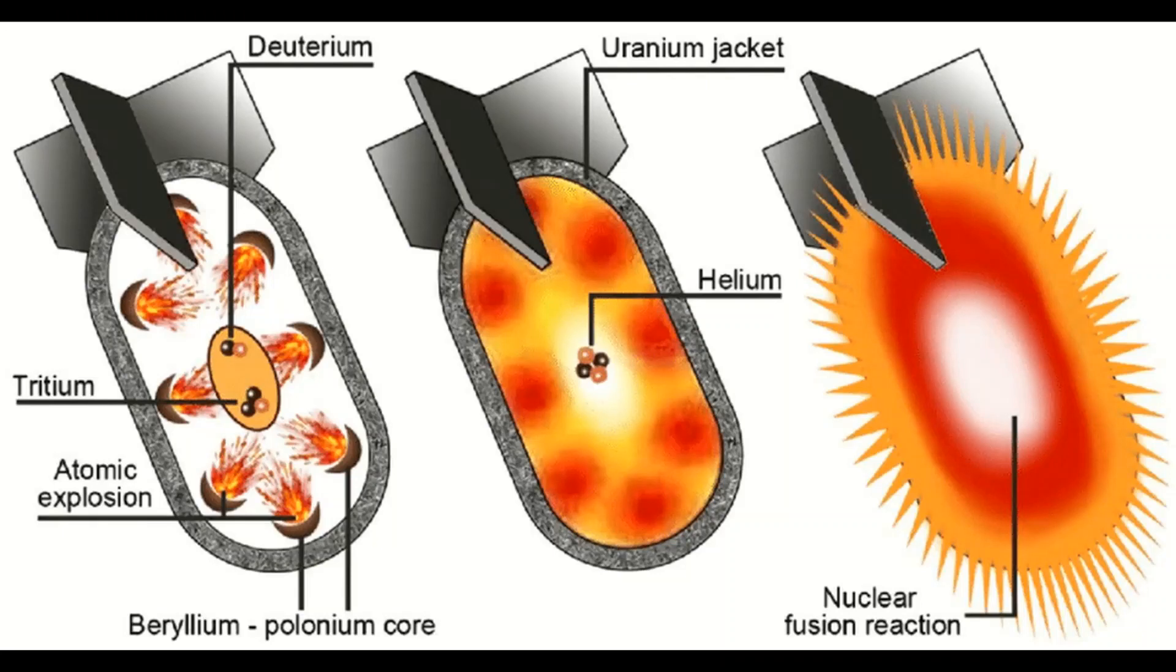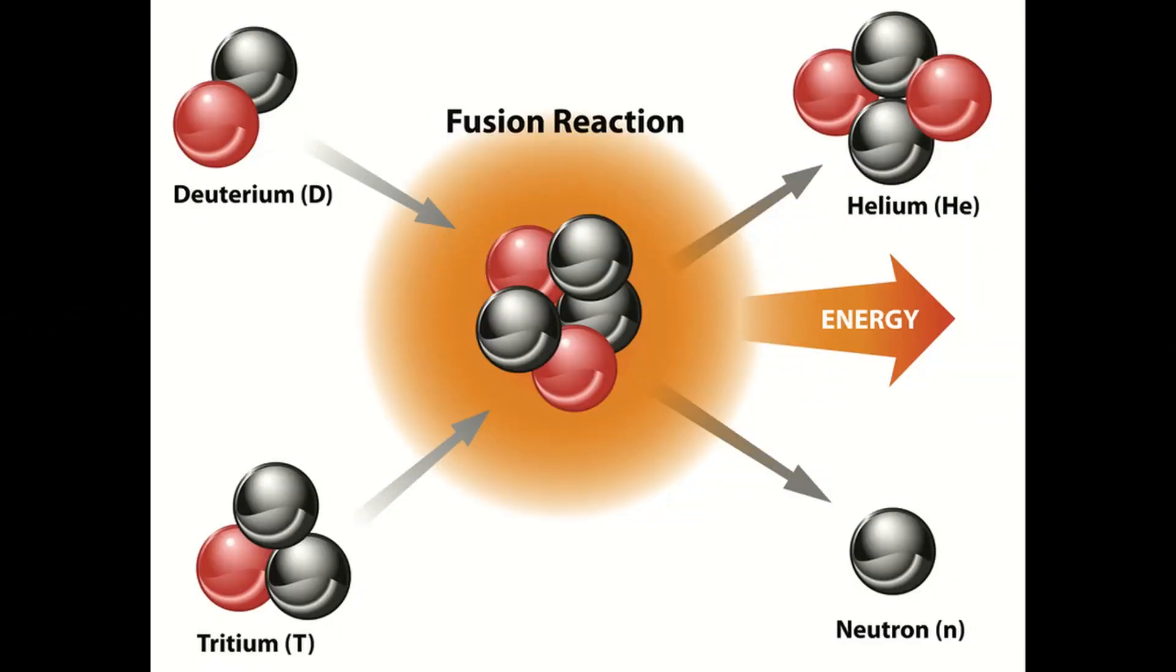Due to the high temperatures required to initiate a nuclear fusion reaction, the process is often referred to as a thermonuclear explosion. This is typically done with isotopes of hydrogen, deuterium and tritium, which fuse together to form helium atoms. This led to the term hydrogen bomb to describe the deuterium-tritium fusion bomb.